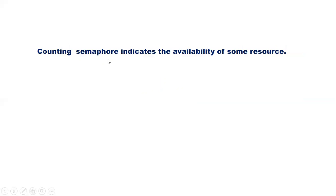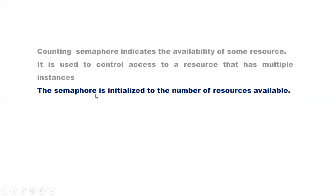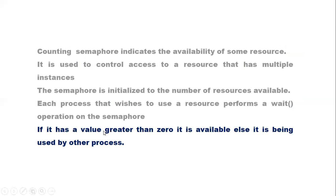The counting semaphore indicates the availability of some resource. It is used to control access to a resource that has multiple instances. The semaphore is initialized to the number of resources available. Each process that wishes to use a resource performs a wait operation on the semaphore. If it has a value greater than 0, the resource is available; else it is being used by some other process.